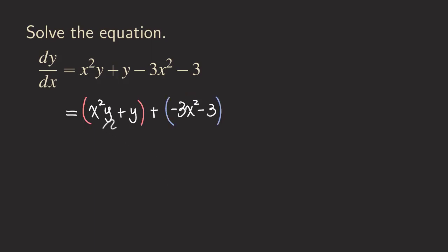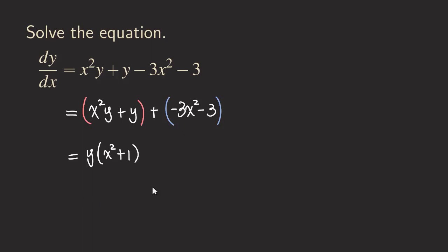We are going to factor out the greatest common factor from each group and see what happens. Next we are going to factor the y, getting x squared plus one inside the parentheses. And then for the second group, we can factor out negative three, so we get minus three and then x squared. For this second term, because we already pulled out the negative three, we are left with positive one. Make sure that you pay attention to the sign, so we get plus one.